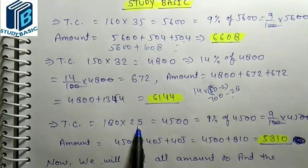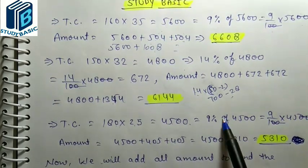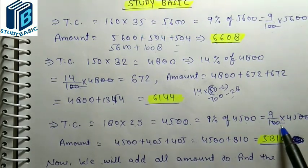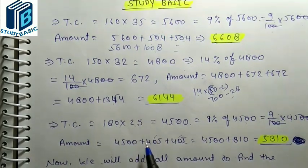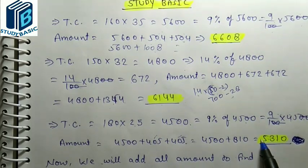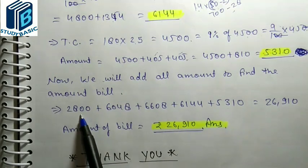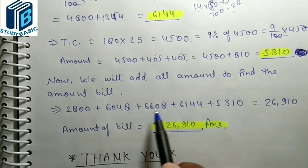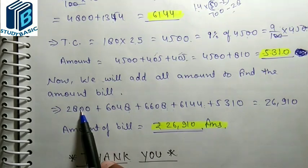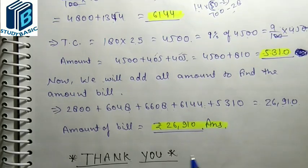Fifth item: 180 × 25 = Rs. 4500. GST rate is 18%, so CGST = SGST = 9% each. 9% of 4500 = Rs. 405. Amount = 4500 + 405 + 405 = Rs. 5310. Total bill = 2800 + 6048 + 6608 + 6144 + 5310 = Rs. 26,910.